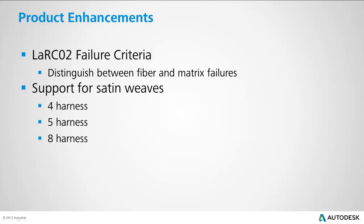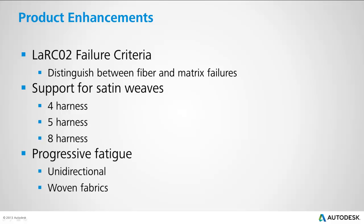Many customers have requested support for 4, 5, and 8 harness satin weaves in addition to the plain woven solution included in the software. The 2014 release has these added functionalities for the 4, 5, and 8 harness fabrics. We have also implemented a progressive fatigue solution for both unidirectional and woven composite lamina. Let's take a closer look at the fabric and fatigue solutions for more information.